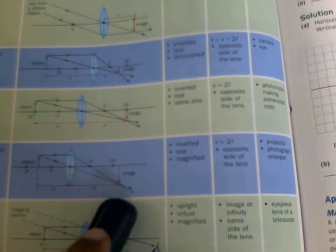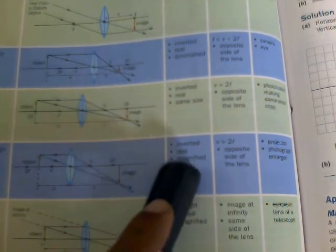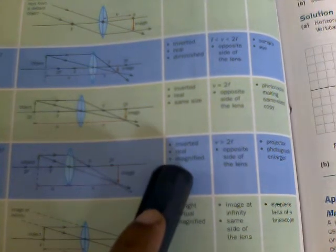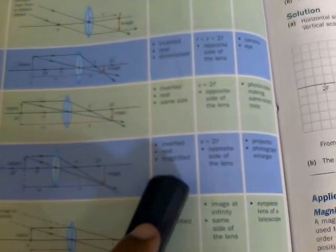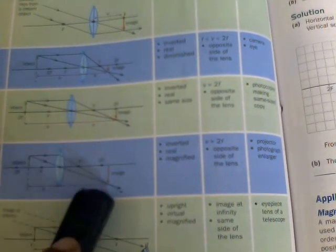But the image is inverted. Inverted image is always a real image and magnified. Magnified means larger than the size of the object.